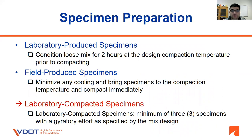For laboratory produced specimens, we need to condition loose mixture for two hours at the design compaction temperature prior to compacting. For field produced specimens, we need to minimize any cooling, bring the specimen to the compaction temperature, and compact immediately. For laboratory compacted specimens, we need a minimum of three specimens with the gyratory effort as specified by the mix design.